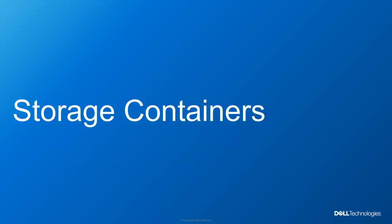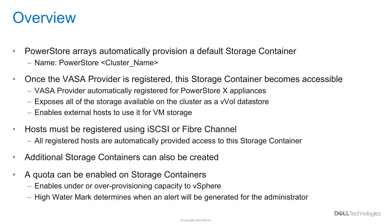Lastly, we'll discuss storage containers. PowerStore automatically provisions a default storage container across all cluster capacity. When the VASA provider is registered for a PowerStore T appliance, this storage container becomes accessible and can be added as a vVol datastore. For PowerStore X, the VASA provider is automatically registered and the vVol datastore mounted as part of the initial configuration. The host needs to be registered using iSCSI or Fibre Channel. Once the hosts are registered, they automatically provide access to the storage container. A user can create additional storage containers, and can also create a quota with a high-water mark that triggers an alert based on capacity utilization.